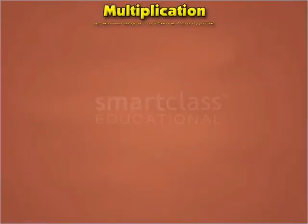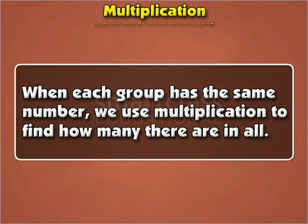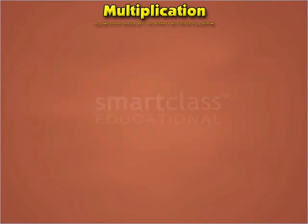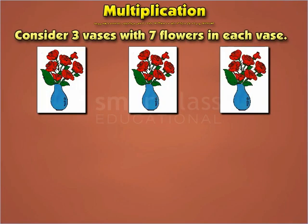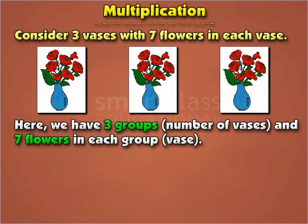Let us start by recalling multiplication. When each group has the same number, we use multiplication to find how many there are in all. For example, consider three vases with seven flowers in each vase. Here, we have three groups — that is, the number of vases — and seven flowers in each group, i.e., each vase.